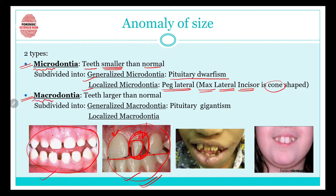Next comes macrodontia, in which 'macro' means big, so the teeth are larger than normal size. It is also subdivided into generalized and localized. In generalized macrodontia, the reason can be pituitary gigantism — for microdontia it was pituitary dwarfism, whereas for generalized macrodontia it is pituitary gigantism. In localized macrodontia, only certain teeth are larger than normal size.